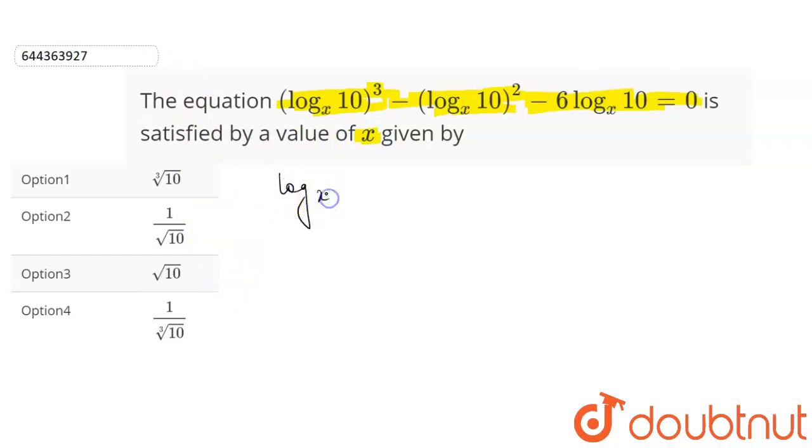So if we consider log base x 10 to be equal to a, then our equation becomes a cubed minus a squared minus 6a equals 0. We can cancel a from here. We will be left with a squared minus a minus 6 equals 0. Now if we solve this by middle term splitting,